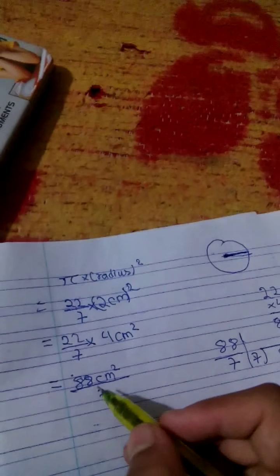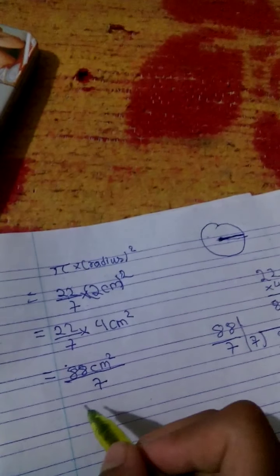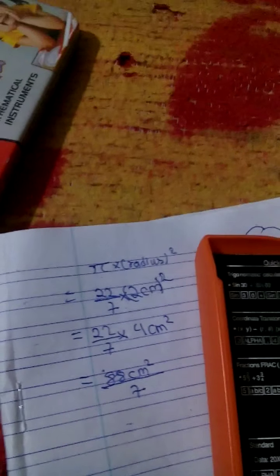And the value of pi is 22 by 7. Like this. Now how can you measure? You can use calculator. I am using calculator now. My calculator is like this.